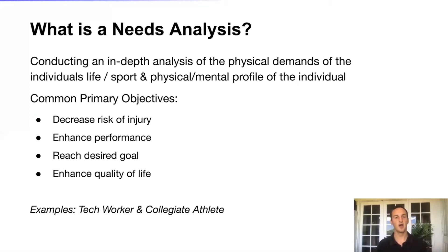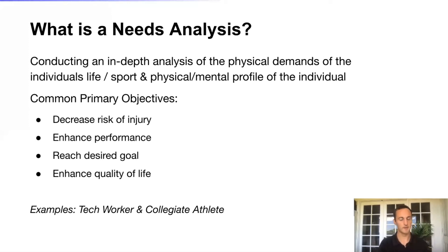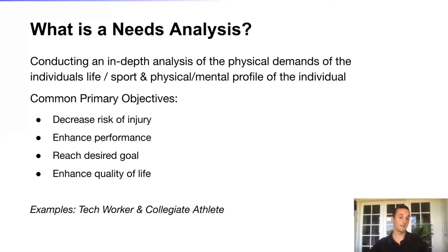Let's take the example of a collegiate soccer player. The depth you go into the needs analysis will really separate how solid your program is. You can think about bioenergetic specificity — what energy system are they predominantly using? Where are they strong and weak, and where should you allocate their training? You also consider the biomechanical specifics — in soccer, gait looks different than long-distance running because there's a ball involved, more forward lean, and a lot more acceleration. So are you going to work more on top speed, or on footwork, mechanics, and acceleration profile?